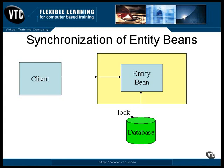Now the transaction begins. This is the same sort of thing we looked at earlier. A number of different methods can be called in and by the bean, and the data in the database will not change while this is happening. The bean can do database updates, and the container keeps track of it all. If the bean is unable to finish and the transaction needs to be rolled back, it's simply a matter of removing the locks from the database, and everything goes back to the way it originally was.